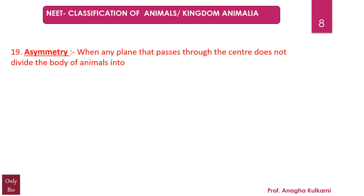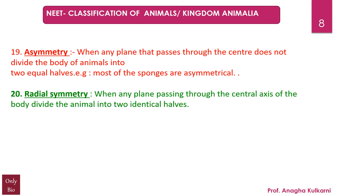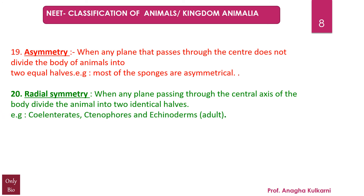Point number 19: Asymmetry — when any plane that passes through the center does not divide the body of the animal into two equal halves. Most sponges are asymmetrical. Radial symmetry — when any plane passing through the central axis of the body divides the animal into two identical halves, we call it radial symmetry. Examples: cnidarians, ctenophores and adult echinoderms.